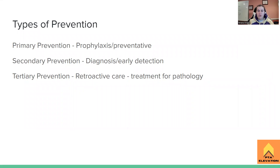The types of prevention we have are primary, secondary, and tertiary. If you get anything from this presentation, this slide right here is the oversimplified overview. Primary prevention is our preventative measures — our prophylactics — basically anything that's preventing the problem from happening in the first place. It's like when you look at all your assignments at the beginning of the semester and plan it all out so you don't panic.